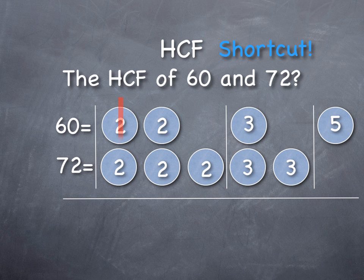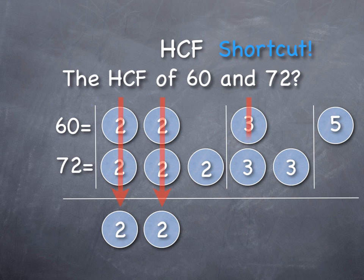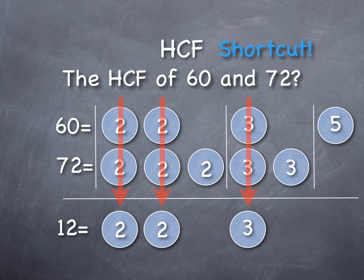If we identify the prime factors that they both have - so they both have two twos and they both have at least one three - if we identify those building blocks that each of them have and we multiply those together, we multiply the common prime factors, then we get the highest common factor which we abbreviate HCF. So we know the highest common factor of 60 and 72 is equal to 12.